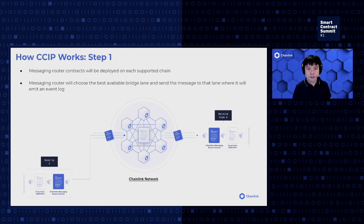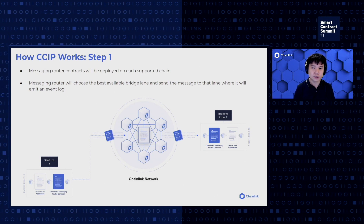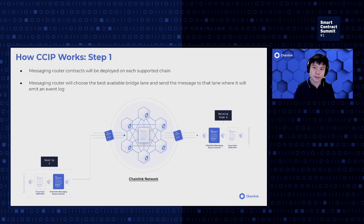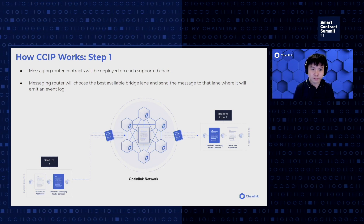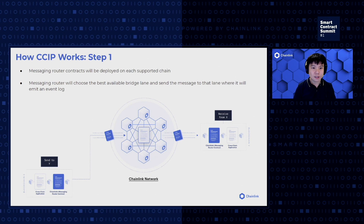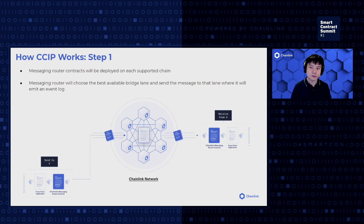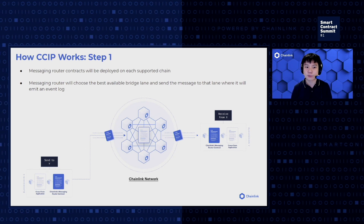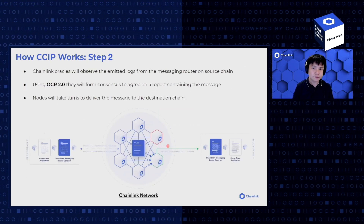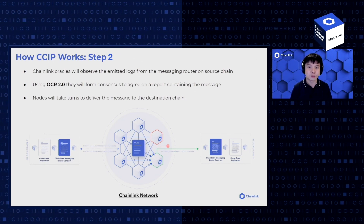Let's break down how this works. Messaging router smart contracts will need to be deployed on every chain to accept and send messages using the CCIP interface. Behind the messaging router will be a registry with several bridge lane implementations conforming to the CCIP standard. Each lane is backed by a DON, with outgoing messages going through off-ramps and incoming messages using on-ramps. When an application layer smart contract calls the messaging router with a message request, the router chooses the optimal off-ramp lane implementation based on the destination chain and options. A cross-chain message requested event log is then emitted on-chain, and Chainlink oracles observe the emitted logs on the source chain as part of the job specifications configured via the OCR 2.0 protocol.